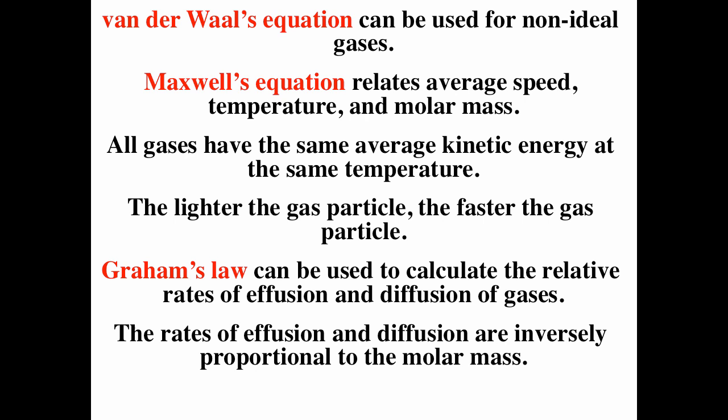To summarize: Van der Waals' equation can be used for non-ideal gases, and we can see a large deviation from ideal behavior under high pressures. Maxwell's equation relates average speed, temperature, and molar mass. All gases have the same average kinetic energy at the same temperature — temperature is just a measure of kinetic energy at the atomic level. The lighter the gas particle, the faster it moves, but at the same temperature they have exactly the same average kinetic energy. Graham's law can be used to calculate the relative rates of effusion and diffusion — these rates are inversely proportional to the square root of the molar mass.